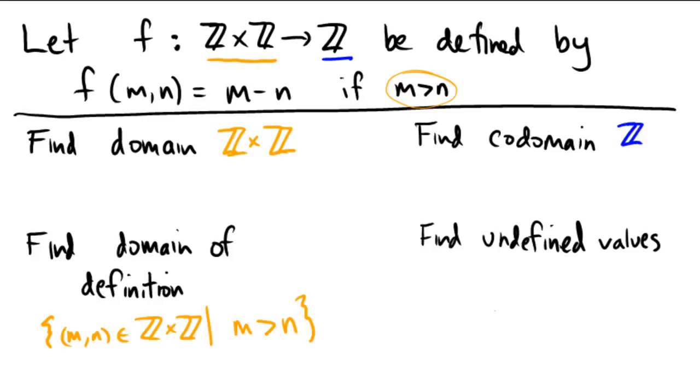But if that's the restricted domain, then what are the undefined values? Or more appropriately, what are the values of the domain where the function is undefined? Well, that would be the set of (m,n) in the domain where you are not defined. So that's going to be the places where m is less than or equal to n.